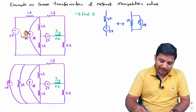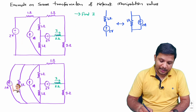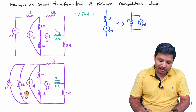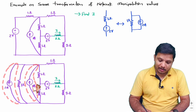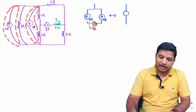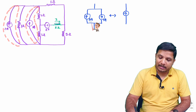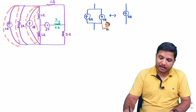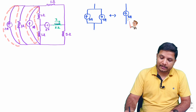I have replaced this series combination of resistor and battery with a current source in parallel with a resistor. Now we can see two current sources in parallel with each other. Both current sources are in the upward direction, so the resultant direction is upward and the algebraic sum is 2 plus 1, giving 3 amperes.